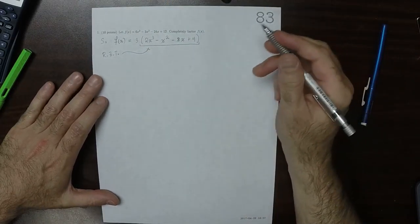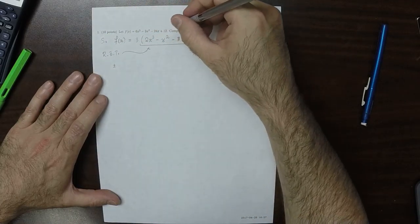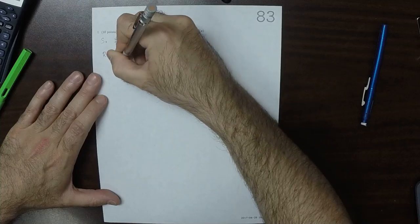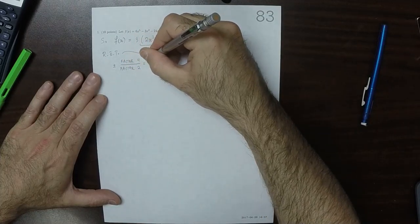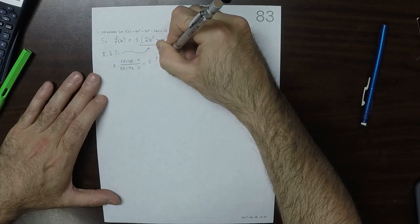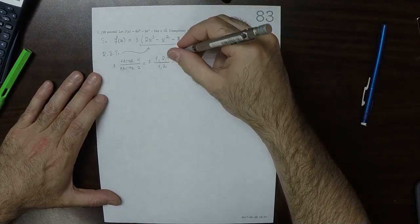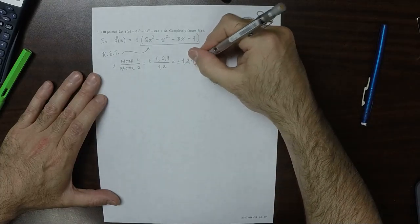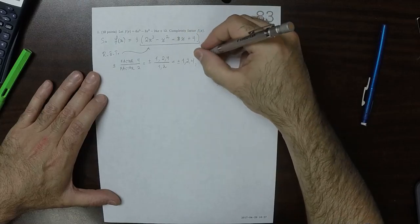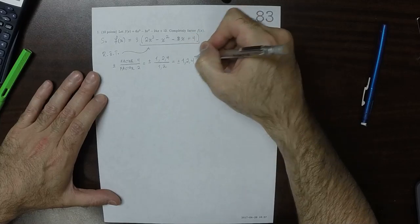So the Rational Zeros Theorem says that that polynomial, if it has any rational zeros, must have zeros of the form plus or minus a factor of 4 divided by a factor of 2. That is to say, plus or minus 1, 2, 4 in the numerator, and 1, 2 in the denominator. So that is plus or minus 1, 2, and 4, taking this denominator to be 1, and plus or minus 1 over 2, so 1 half, 2 over 2, but that's 1, and 4 over 2, but that's 2. So those are all the possibilities.